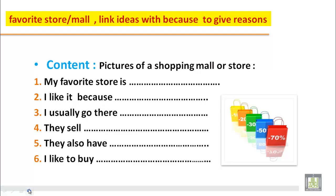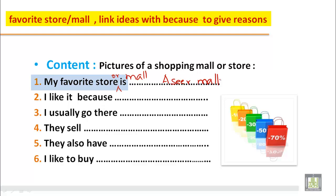So first of all, let us see. For example, my favorite store or mall. My favorite mall is Asir mall. I like it because — I'll give a reason here. Why do you like it? Because we get all kinds of stuff. 'Stuff' means things — all kinds of stuff there.